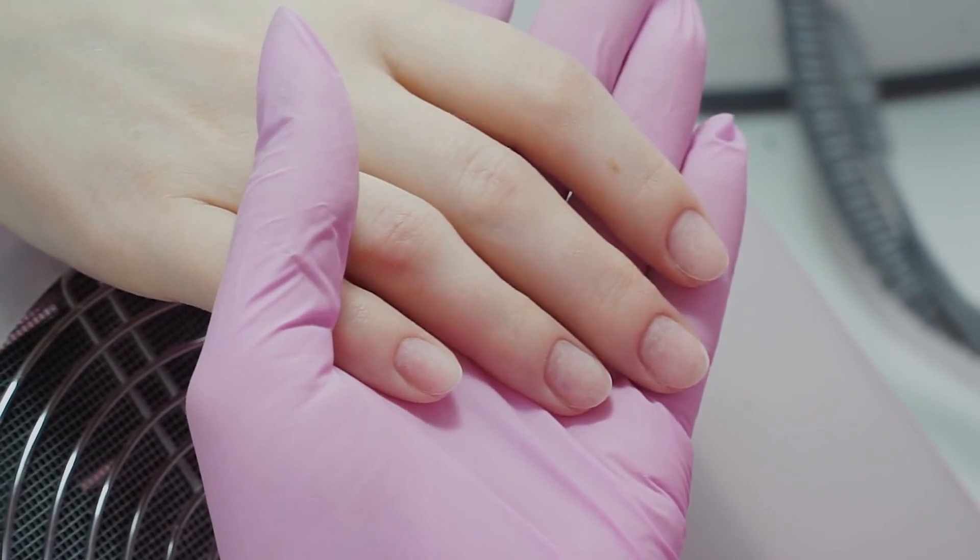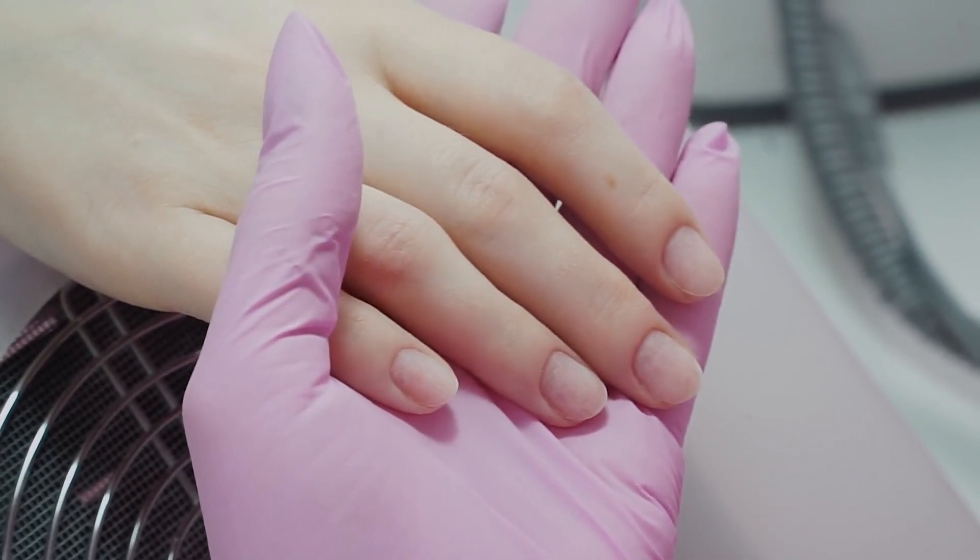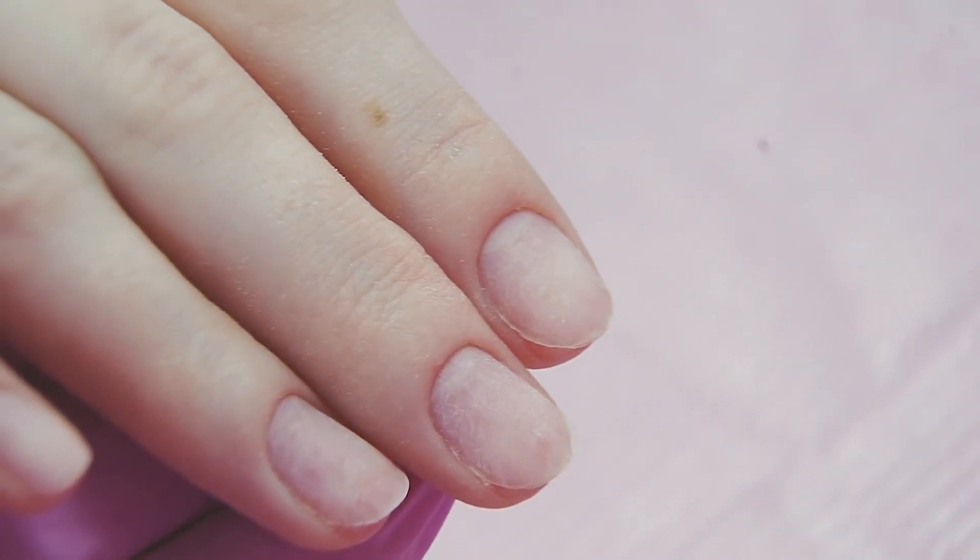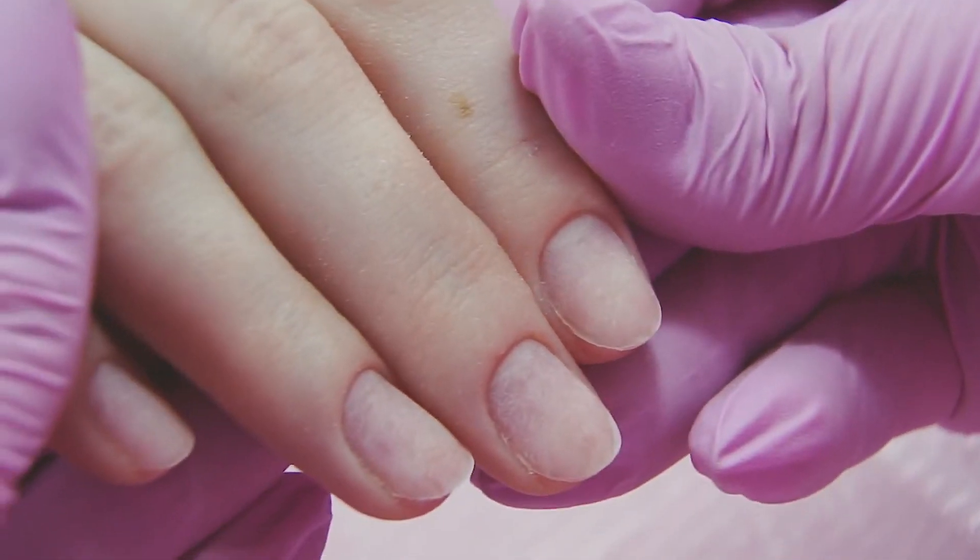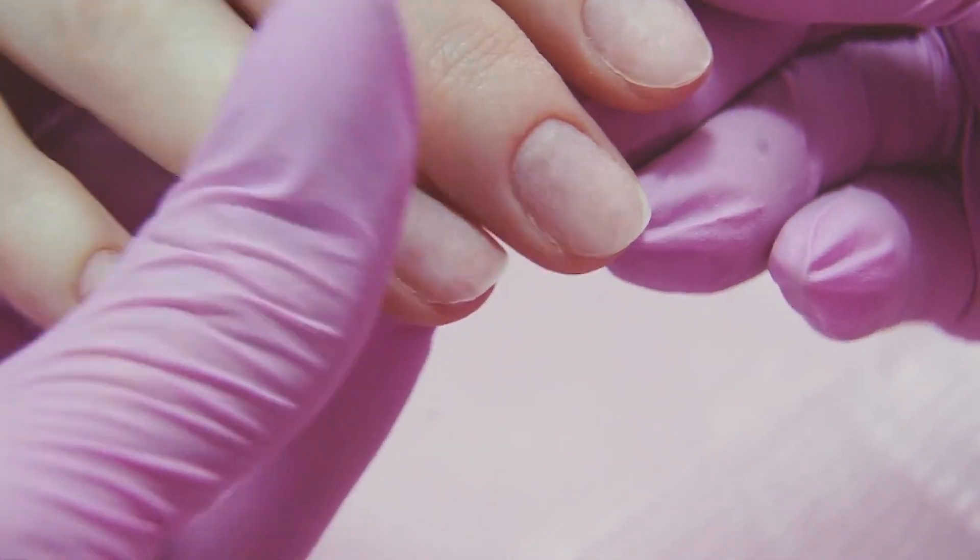Let's take a look at the result. The cuticle is gone and we see that there is no redness. That means that the e-file manicure was performed correctly. We went through all the e-file process, from coating removal to cuticle cutting. Let me know in the comments what difficulties you face, subscribe to the channel, success in your work, bye bye!